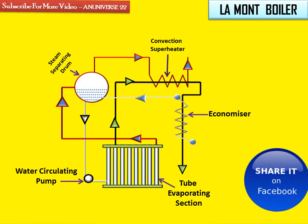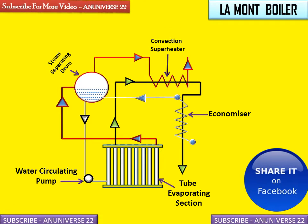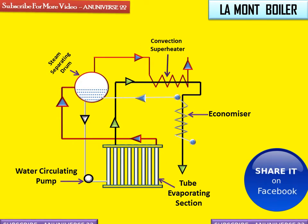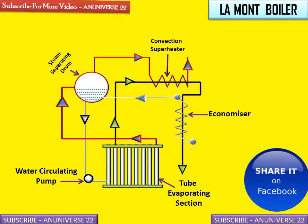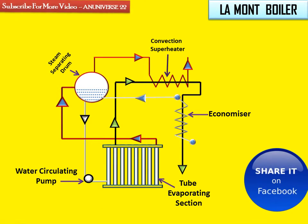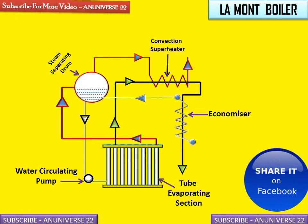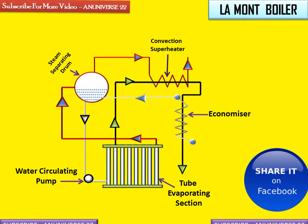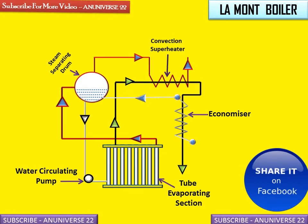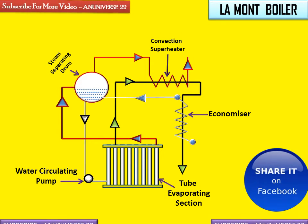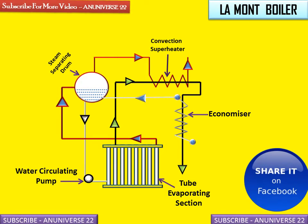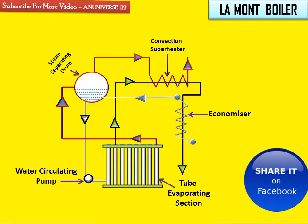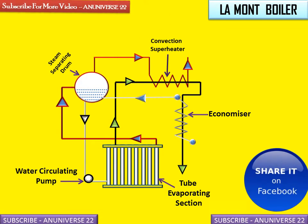This is the path of the flue gases from the evaporator, through the super heater, and through the economizer. Now we will discuss the working of this high pressure boiler. It is a forced circulation, internally fired water tube boiler, and the fuel is burned inside the boiler. Water is circulated by a centrifugal pump through the evaporator tube.